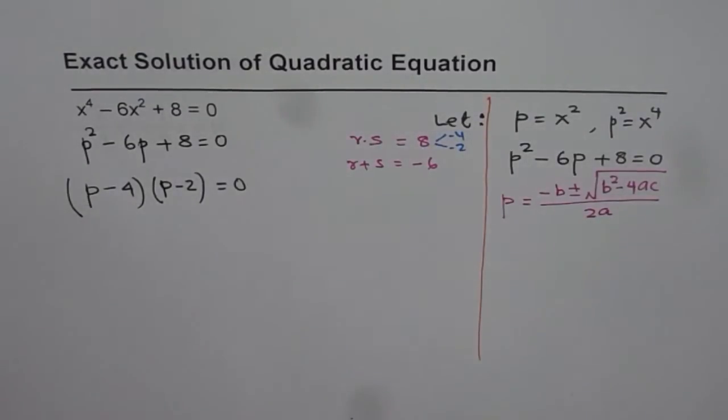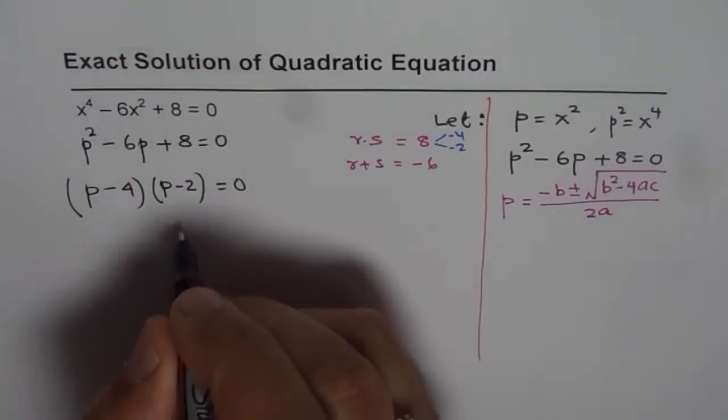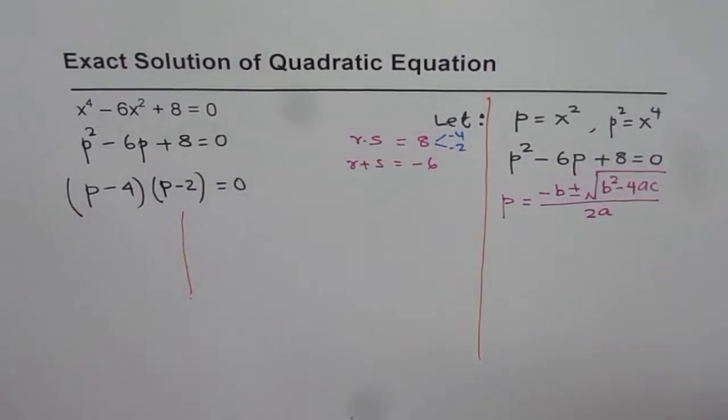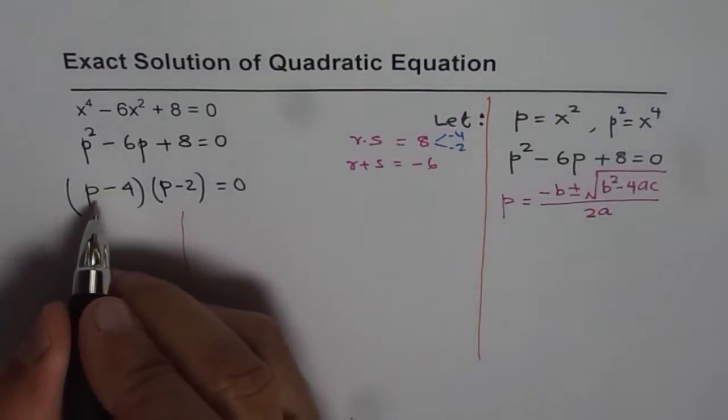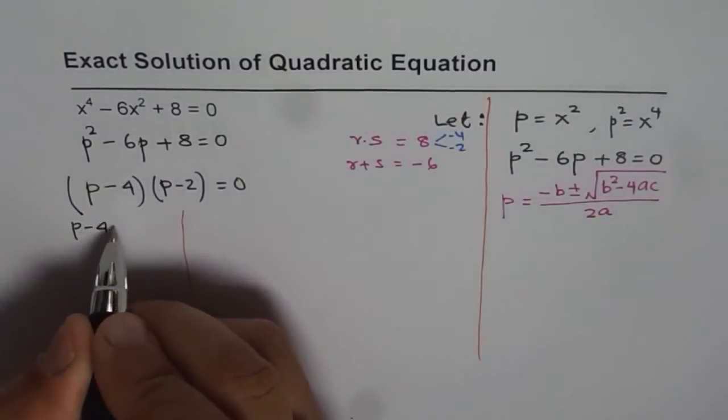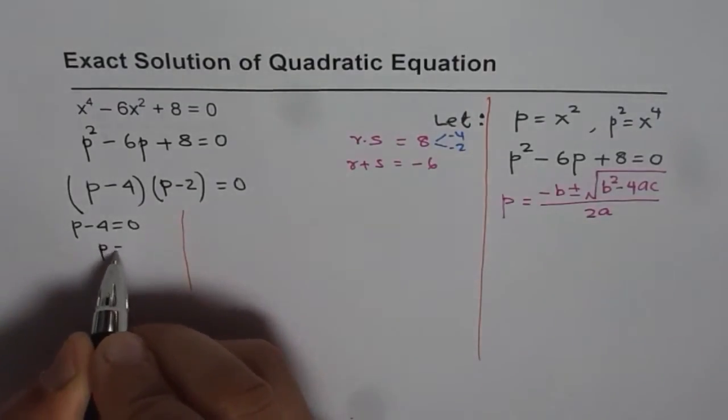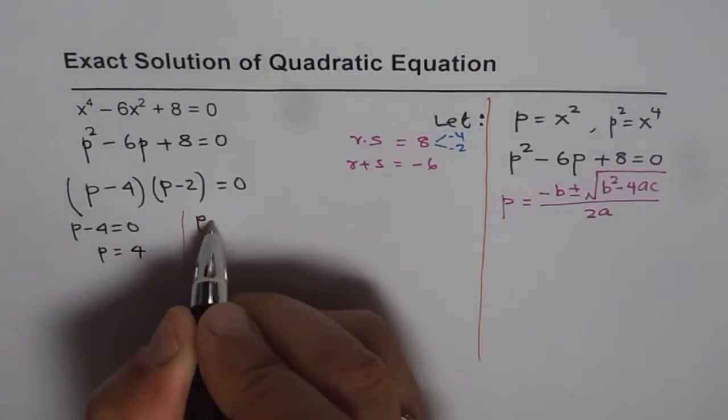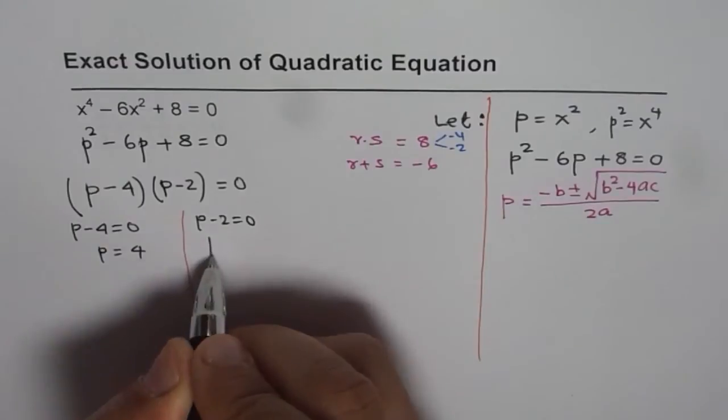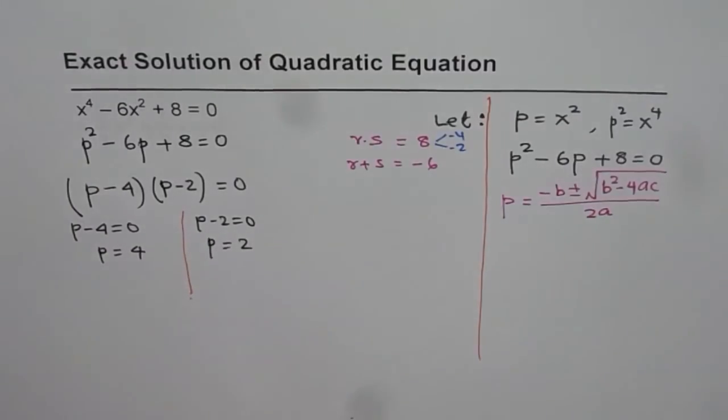Now it has two solutions. Either p could be 4, or p could be 2. If p minus 4 equals 0, then p equals 4. If p minus 2 equals 0, then p equals 2. So we got two solutions. From here,